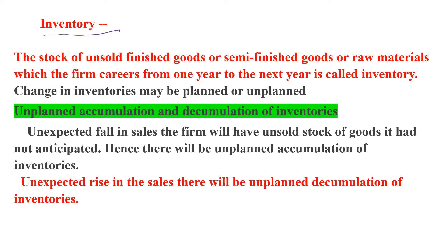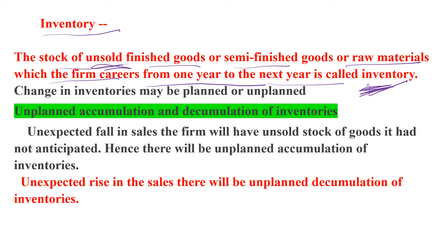What is inventory? Inventory is a stock of unsold finished, semi-finished, and raw materials which a firm carries from one year to the next — that is called inventory. Inventory is a stock variable as it is measured at a point of time. Change in inventory is the difference between opening stock and closing stock, measured over a period of time. This change in inventory may be planned or unplanned.